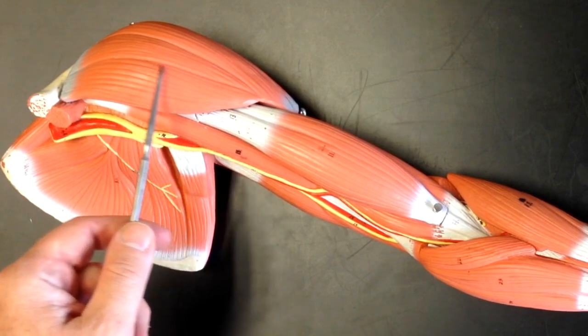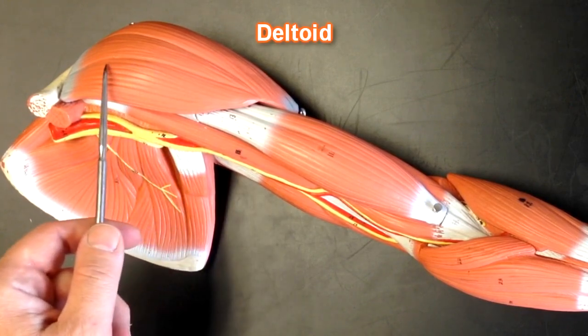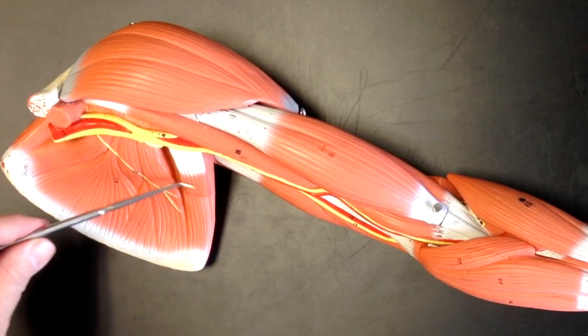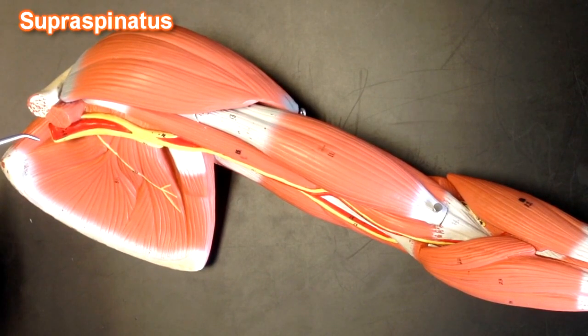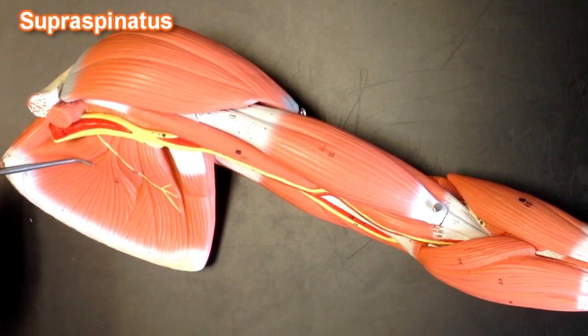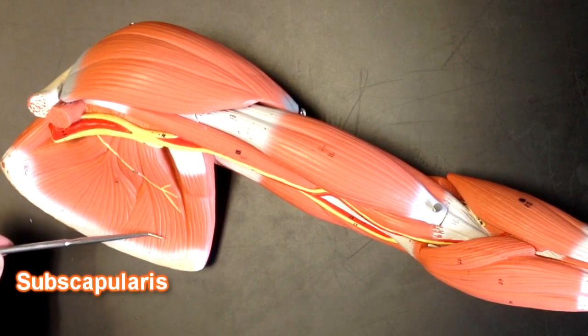This muscle right here is the deltoid muscle. In here these are muscles of the scapula and we've got the supraspinatus up here. We also have the subscapularis muscle here.